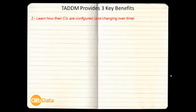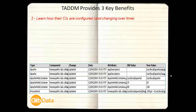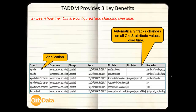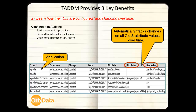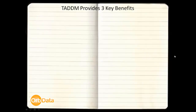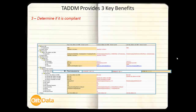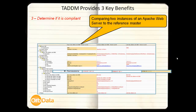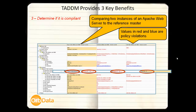The second benefit is that the software discovers how CIs are configured and not just identifying individual applications. The software also tracks changes on all CIs and attribute values over time. And finally, the third key benefit is the ability to compare the configuration of the applications discovered to a reference master or standards policy. This in turn lets you catch rogue changes and allows for remediation of the violation.